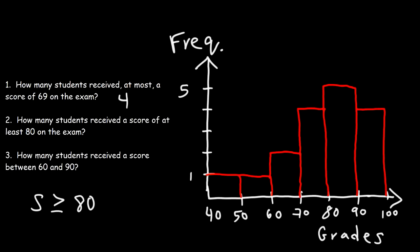So what we want is the data to the right of this region, highlighted in blue. So between 80 and 89, we have five students who scored in that range. And between 90 and 100, there were four students who scored in that range. So five plus four is nine. And so that's the answer for number two.